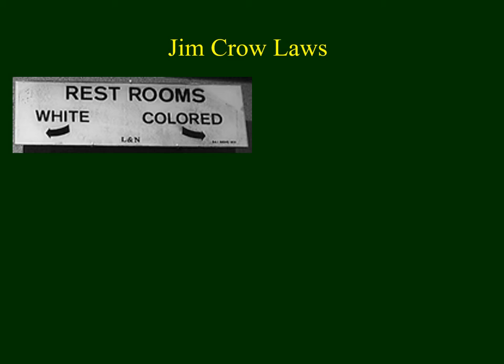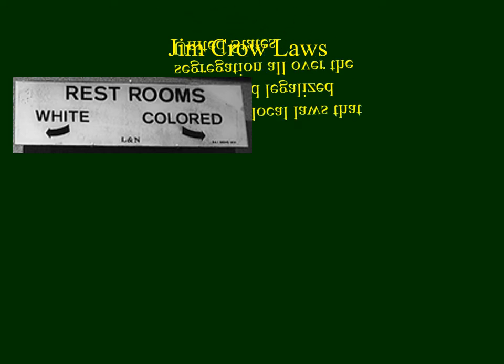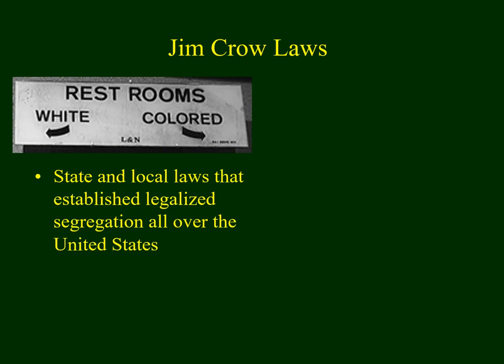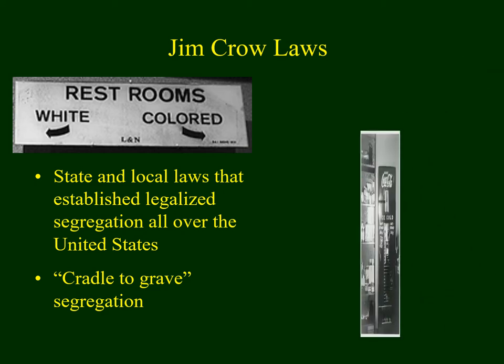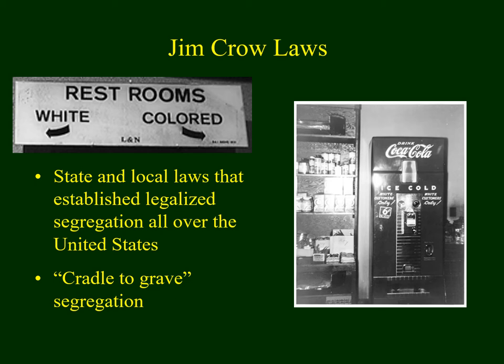This gave us the so-called separate but equal doctrine. Once the Supreme Court declared that it was legal to segregate based on race, state and local communities passed their own laws, often referred to as Jim Crow laws. These established segregation all over the country. Restrooms, drinking fountains, schools, movie theaters, sports stadiums, and courtrooms were all segregated. People called this cradle-to-grave segregation because it began at birth, and it didn't end with death — even funeral parlors and cemeteries were segregated.